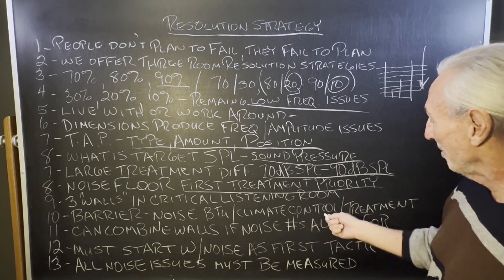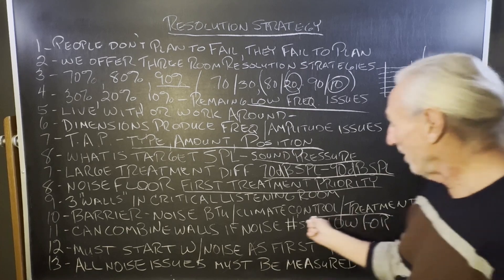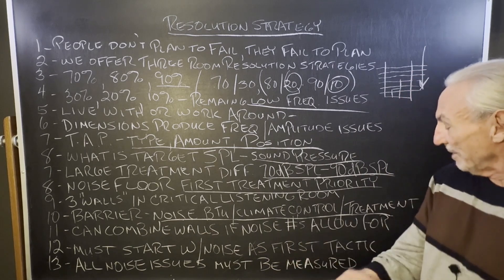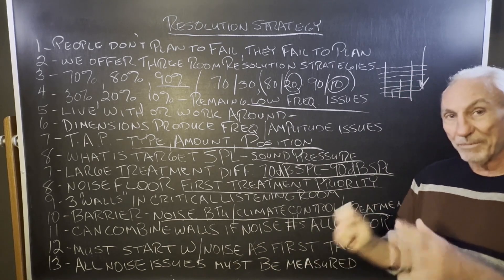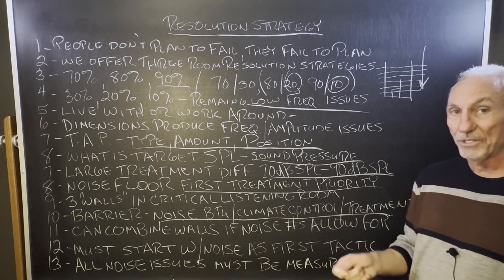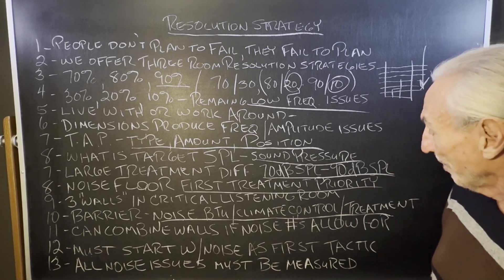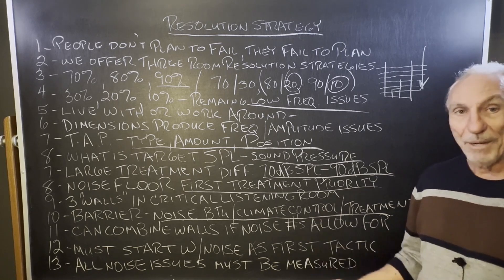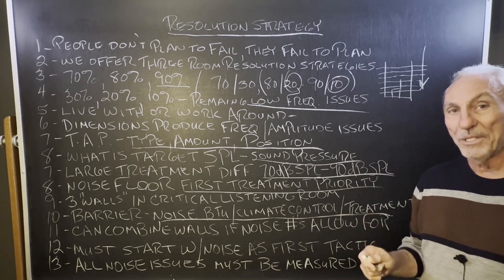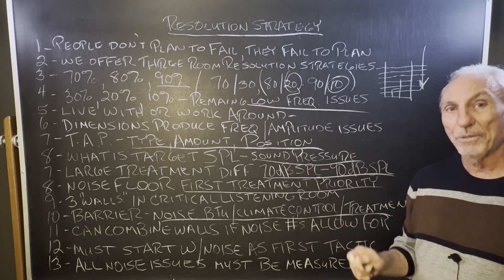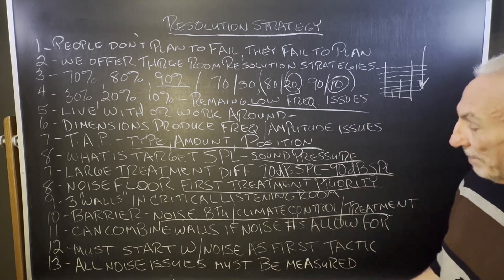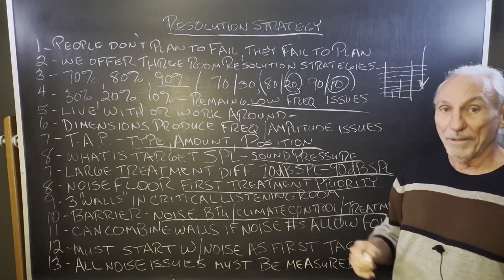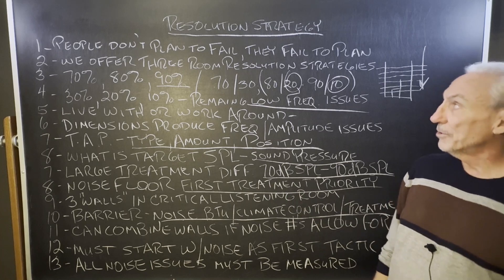So: barrier, noise, BTU — three types of walls. We have the noise barrier, BTU which is climate control, and treatment. Sometimes those walls can be combined, sometimes they can't — it just depends on the noise issues. We must start with noise as our first tactic, and we've got to measure all noise, because the barrier we design is frequency and amplitude dependent on the noise. Step-by-step process towards a resolution — we've got to have a strategy and then take the appropriate steps to achieve it.